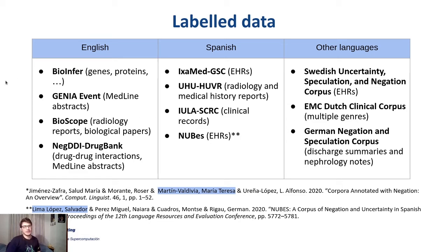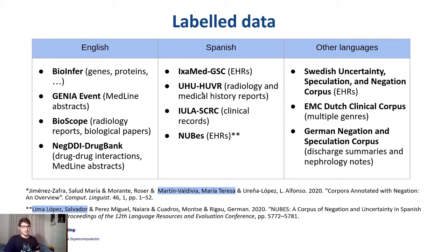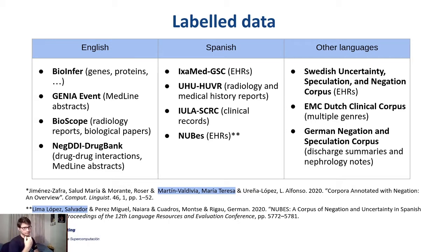There is a lot of variety from different fields. In English, we have things related to genes and proteins, paper abstracts, reports, and drug interactions. In Spanish, there's also great variety — real electronic health records, radiology reports, and clinical records. In other languages, there is less variety but still some resources.